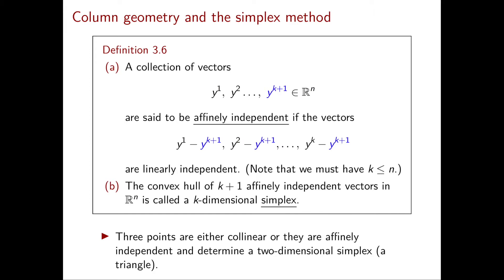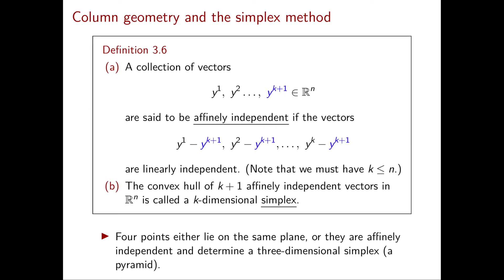Now we can define a simplex. A k-dimensional simplex is the convex hull of k+1 affinely independent vectors in R^n. For example, three affinely independent points determine a two-dimensional simplex, which is the triangle obtained as their convex hull. Four affinely independent points determine a three-dimensional simplex, which is the pyramid obtained as the convex hull of those four points.